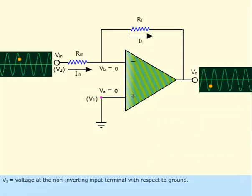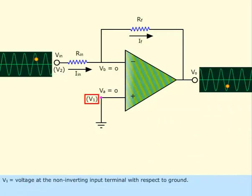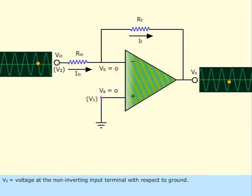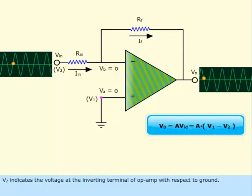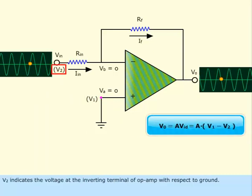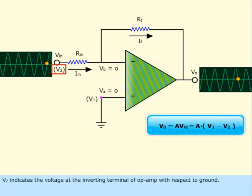V₁ equals voltage at the non-inverting input terminal with respect to ground. V₂ indicates the voltage at the inverting terminal of op-amp with respect to ground.